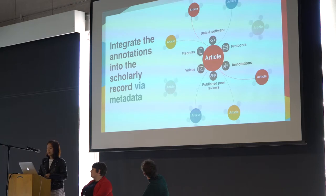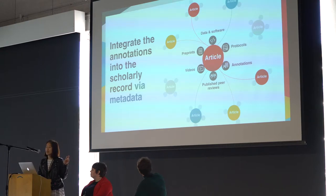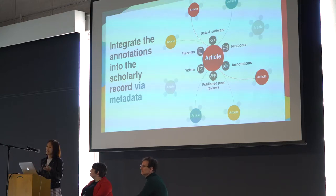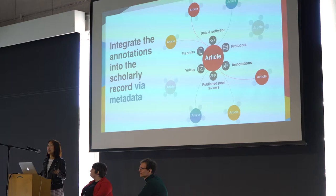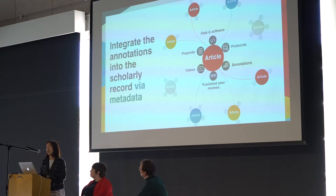Getting annotations into the scholarly record by way of metadata is the mechanism through which Crossref understands we can help out. This diagram illustrates that there are things that link up — and the things that count traditionally are only a subset of the other things that could count if we properly support annotations as part of the formal scholarly record. You have the article connected to other articles, the data and software that underlie the research findings, the preprints, videos, protocols, and the published peer reviews.